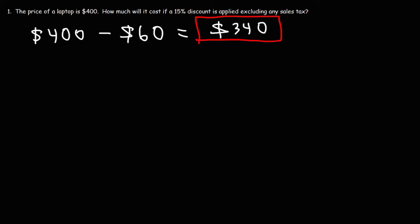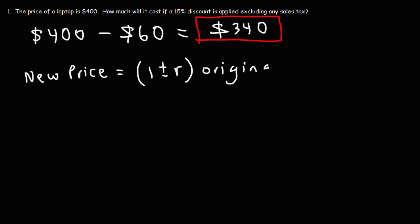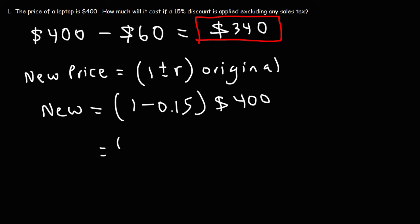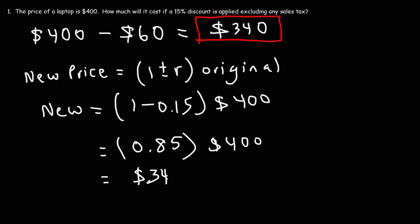Here is another way we can get this answer using a formula. The new price — the price after the discount — is equal to 1 plus or minus R times the original price. Because we're dealing with a discount, that's going to decrease the value of the laptop, so we use negative R. If we were dealing with sales tax, which increases the total price, we'd use positive R. So it's 1 minus R, where R is 15% as a decimal, or 0.15, times the original price of $400. 1 minus 0.15 is 0.85, so 0.85 times 400 gives us the same final answer: $340.